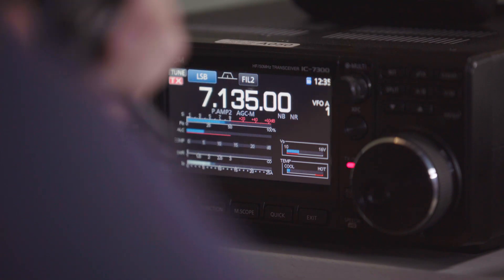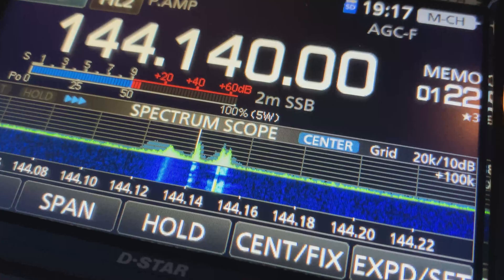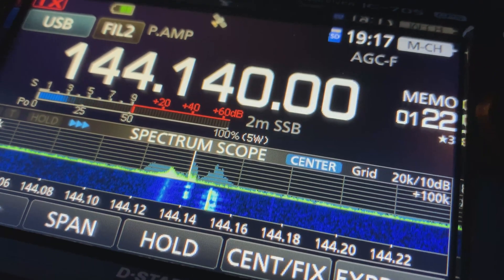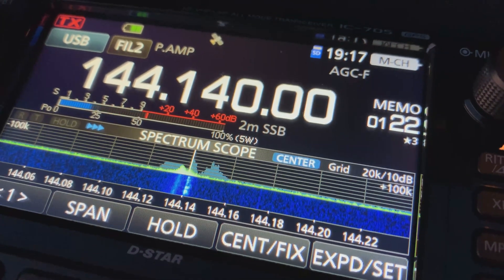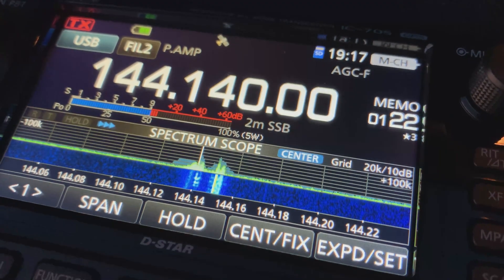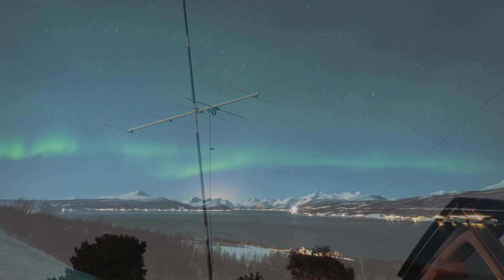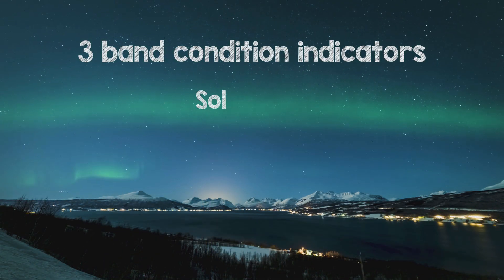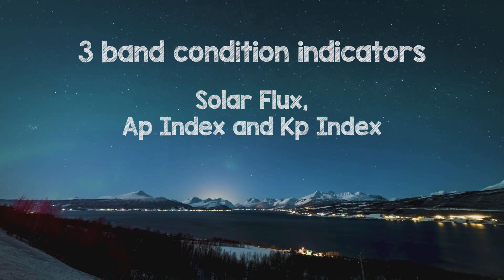One of the key skills for any DXer is to know how to judge what band conditions may be like. To be able to gain an idea about conditions, three main indices are used: Solar flux and the AP and KP indices.